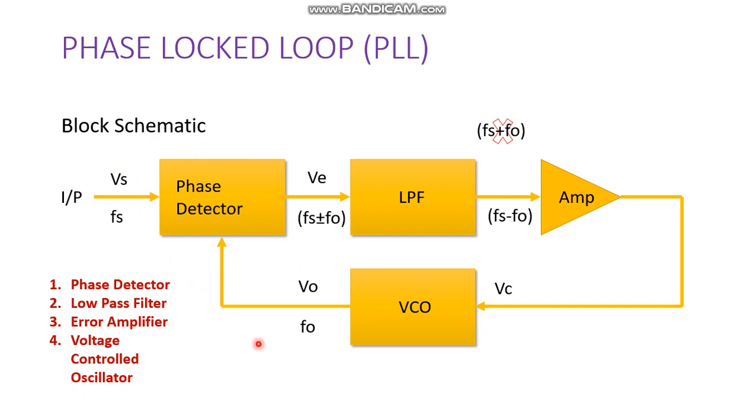Once this action starts, we say that the signal is in the capture range. The VCO continues to change the frequency till the output frequency is exactly same as the input signal frequency. The circuit is then set to be locked. Once locked, the output frequency of VCO is identical to fs